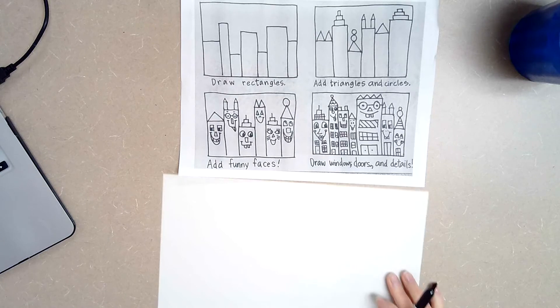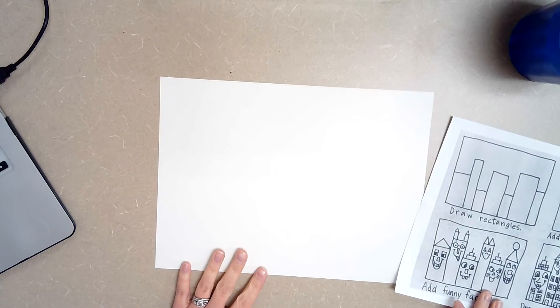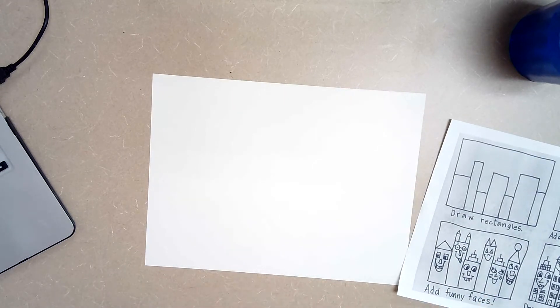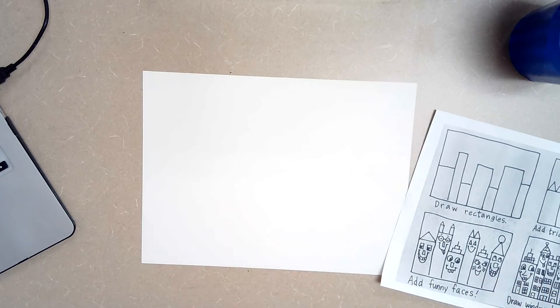I am going to be starting with a marker. You will be starting with a pencil first and then outlining with marker. You are also going to need crayons and markers if you have them. If you don't have markers just use whatever you have available to you.